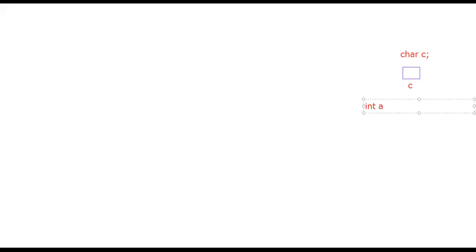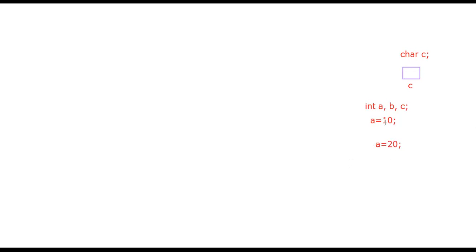Suppose if you want to store multiple variables, like integer a, b, and c. During runtime, suppose I initialize variable a as 10, and then update the value of a to 20. Is it possible to again access the original value of a as 10? No, because with respect to integer a, only one memory block is available, and we are going to update that particular memory block continuously.